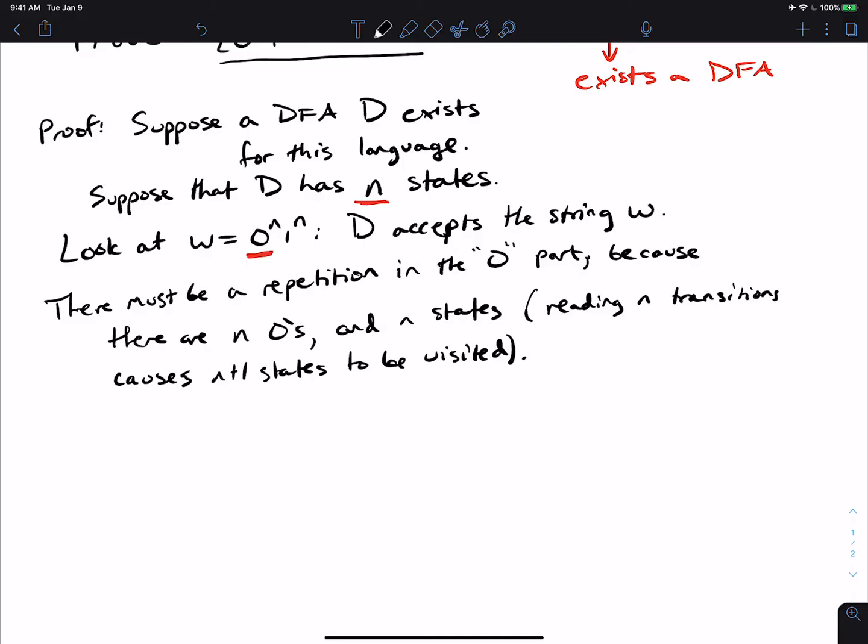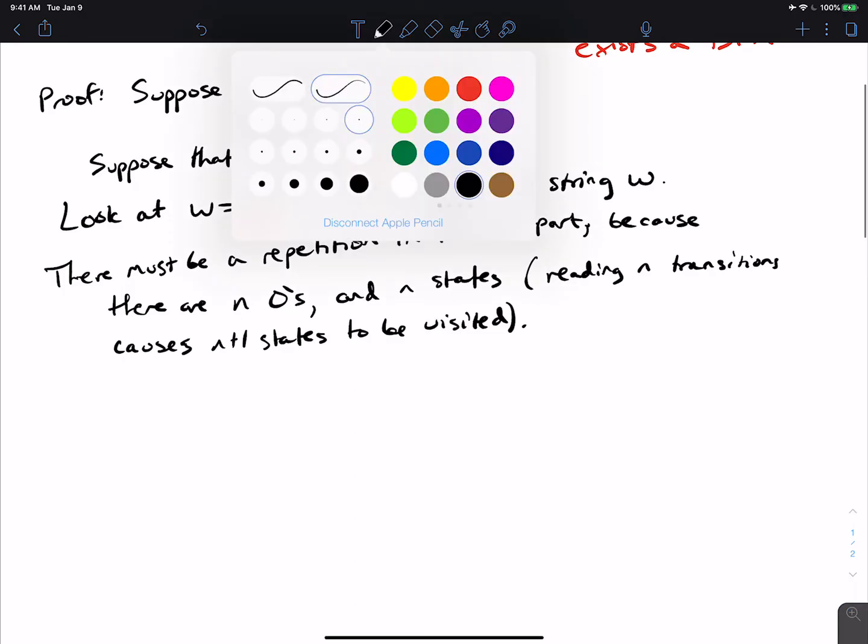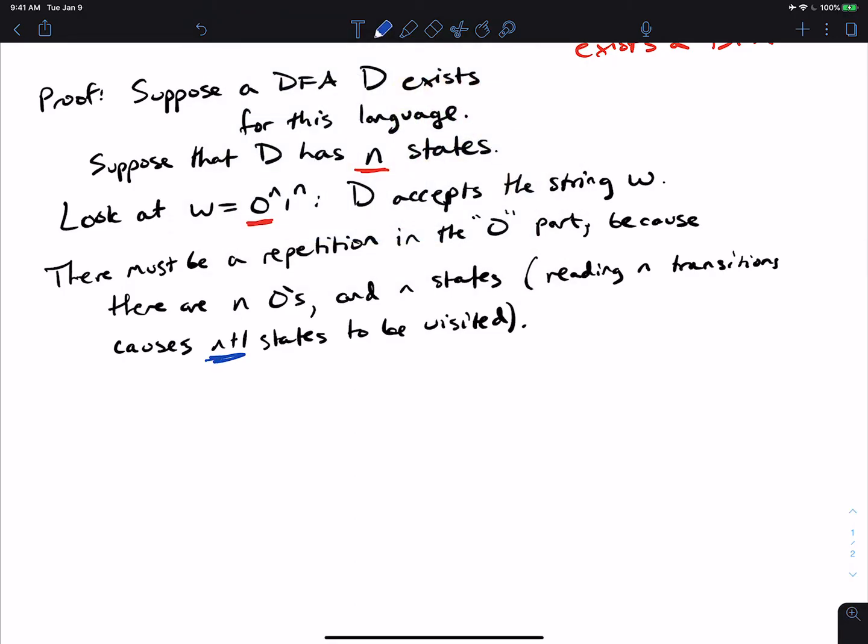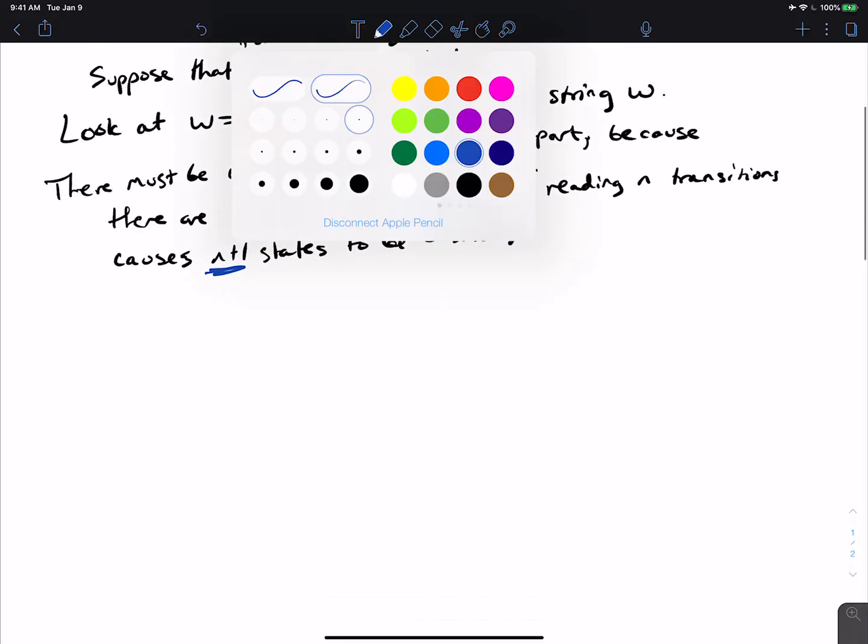So if I have taken n transitions, I've seen n plus 1 states. And this is a thing we should note because we've seen n plus 1 states. And there are only n states in the entire machine. So there must be a repetition.